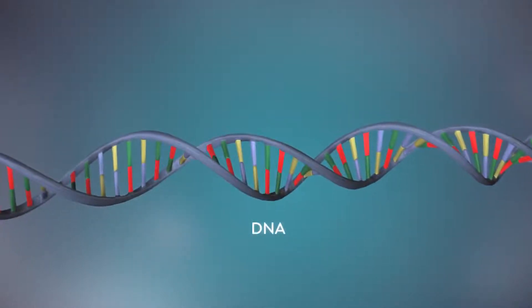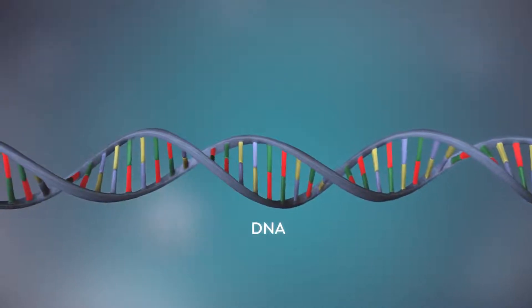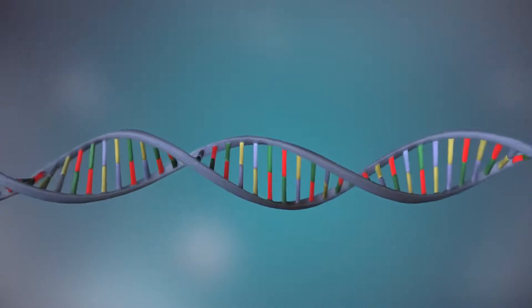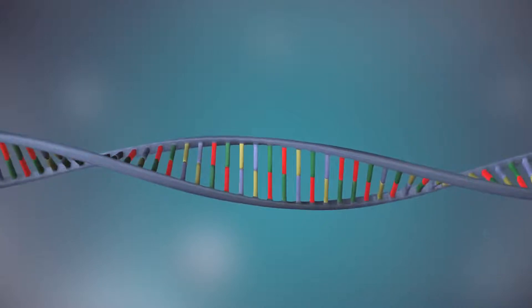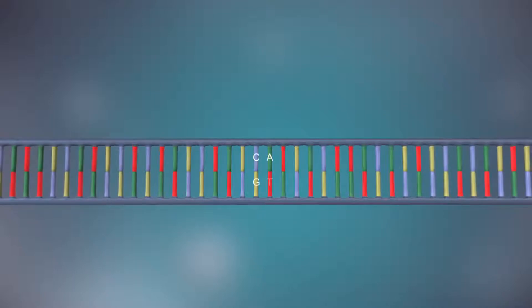DNA is a molecule made up of two strands twisted around each other in a double helix shape. Each strand is made up of a sequence of four chemical bases represented by the letters A, C, G and T.